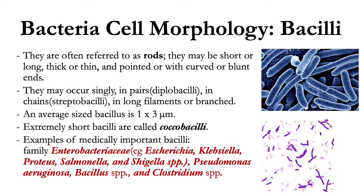Bacilli, often referred to as rods, may be short or long, thick or thin, and pointed or with curved or blunt ends. They may occur singly, in pairs (diplobacilli), in chains (streptobacilli), or in long filaments or branched. An average size bacillus is around 1 by 3 micrometers. Some rods are quite short, resembling elongated cocci — they are called coccobacilli; examples are Listeria monocytogenes and Haemophilus influenzae. Examples of medically important bacilli include members of the family Enterobacteriaceae such as Enterobacter, Escherichia, Klebsiella, Proteus, Salmonella, and Shigella species, as well as Pseudomonas aeruginosa, Bacillus species, and Clostridium species.